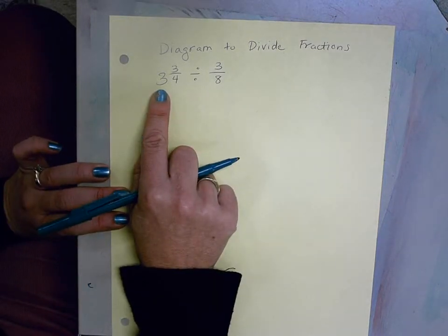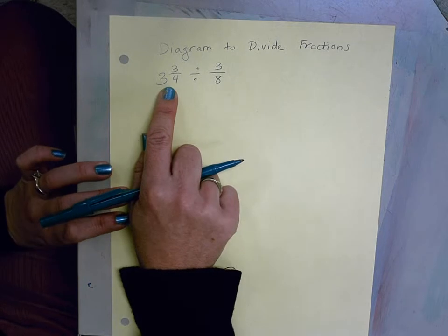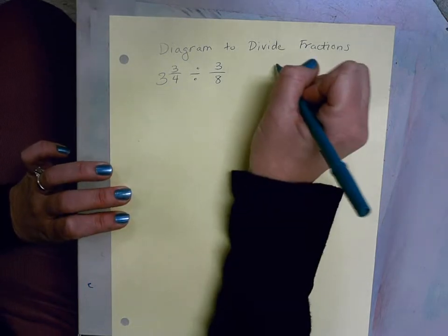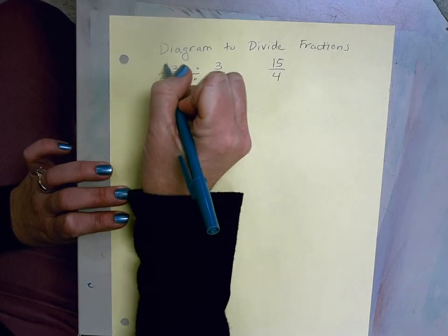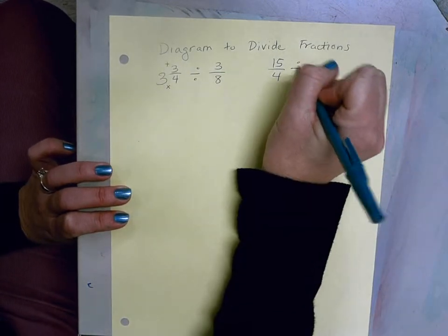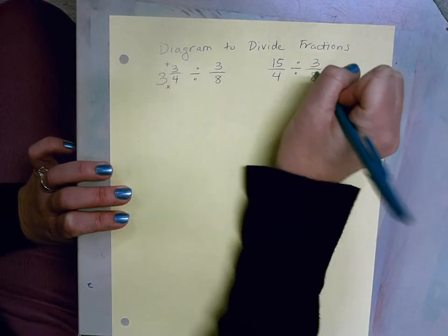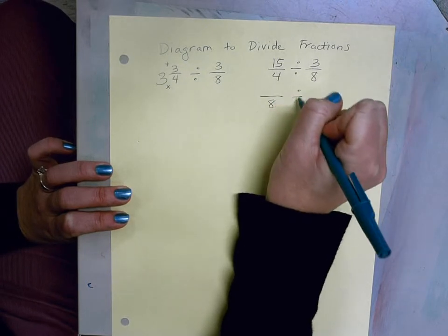So if we wanted to use our algorithm, we would go ahead and change 3 and 3/4 into 15/4. 4 times 3 is 12, plus 3 is 15, divided by 3/8. And then we can get a common denominator of 8.